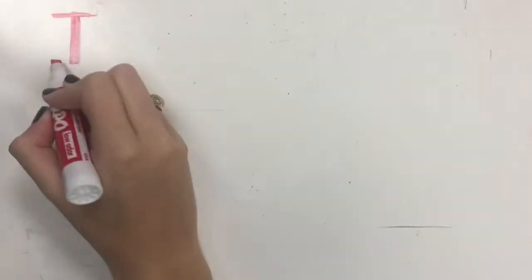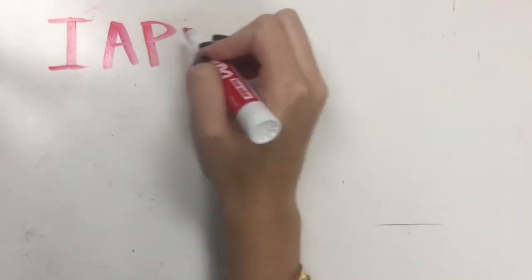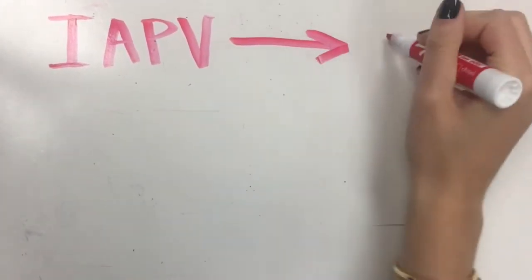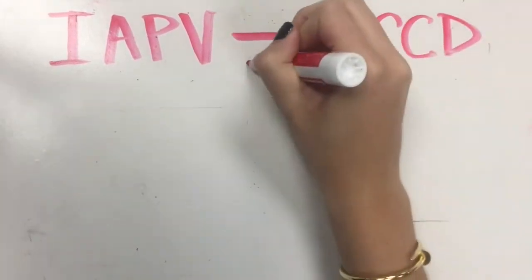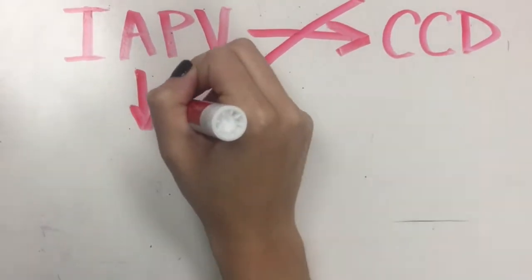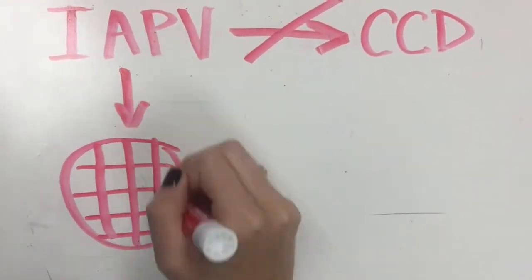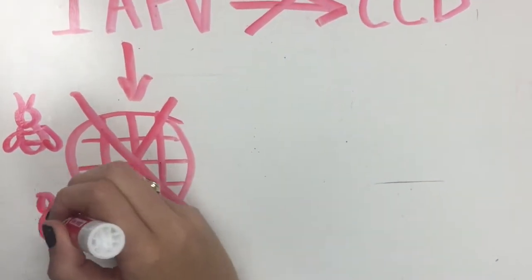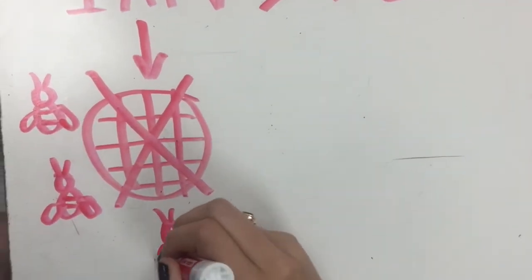This recent decline in bee population is attributed to a phenomenon known as Colony Collapse Disorder, or CCD for short. CCD is the phenomenon in which worker bees suddenly die or abandon their queen. Both the queen and the workers rely on each other to survive, so as a result entire colonies die out overnight.